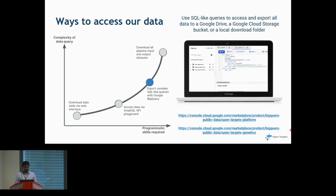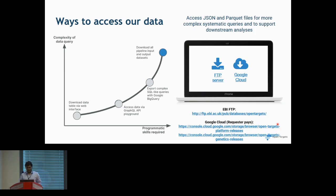If you want access to broader data, we have partnered with Google Cloud, where all our data is stored in the form of SQL-like queries on Google BigQuery, freely available to the public. You can run complex queries and export data for downstream analysis. If you want our entire data source, it is provided via the EBI FTP — you can download all our data including direct and indirect target-disease associations and relevant entity associations, and use this to build your own platform or create your own pipelines.